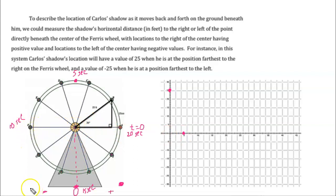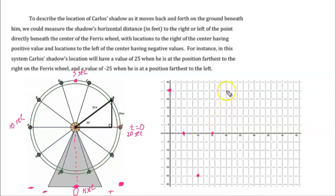At the 10-second mark, his shadow falls all the way to the left — 25 feet to the left — so that's negative 25. At 15 seconds, he's at the bottom, and again his shadow is in the middle, at zero. At 20 seconds, he's back where he started, so the shadow is back at the 25-foot mark. At 25 seconds it's back at the middle, and at 30 seconds it's at negative 25 again.